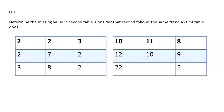Let's start with the video now. Our first question says: determine the missing value in the second table, considering that the second table follows the same trend as the first table. This is our first table and this is our second table, and here is the missing value — we have to determine what it should be. In these sorts of questions, sometimes there is no proper technique.